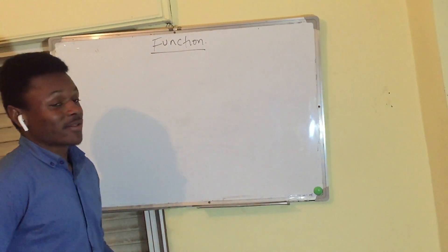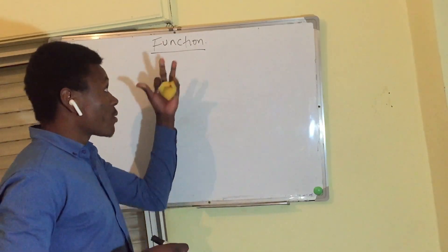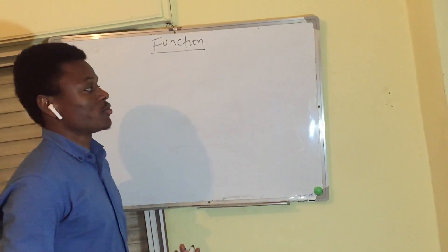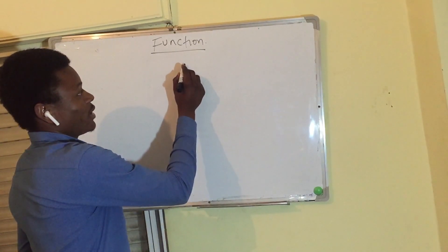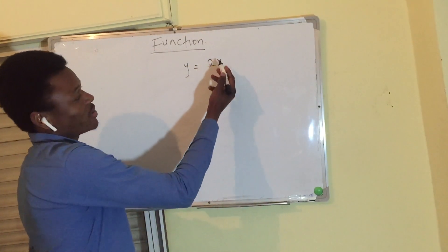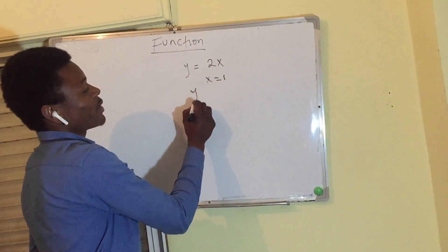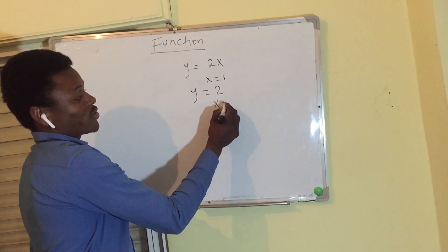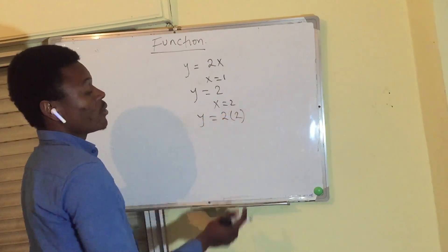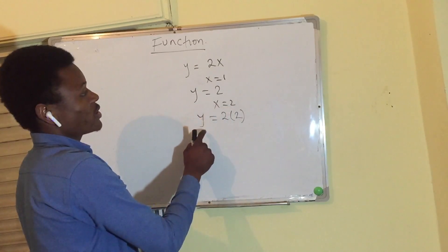A function is any formula — an accurate formula where an input produces an output. For example, if y equals 2x, then x is the input. Any value for x gives a different y. So if x equals 2, then y equals 2 times 2. Different input gives a different output.